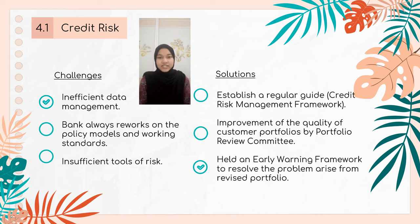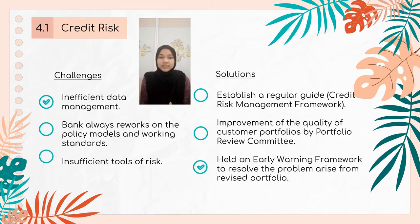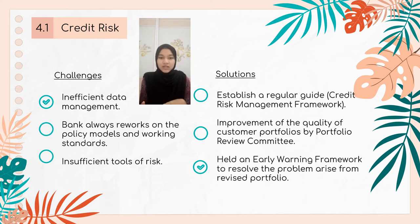Moving to the first type of risk, which is credit risk. There are many challenges and solutions faced by Alliance Islamic Bank Berhad while managing credit risk. One challenge is inefficient data management among employees, which causes difficulty obtaining the right customer data — for example, a bank may not have correct information about their customer's exit and entry value because it was not properly recorded. The next challenge is the bank having to rework policies, models, and working standards, leading to an overlap of information that adversely impacts the bank's efficiency ratio, which will not bring justice to all customers.